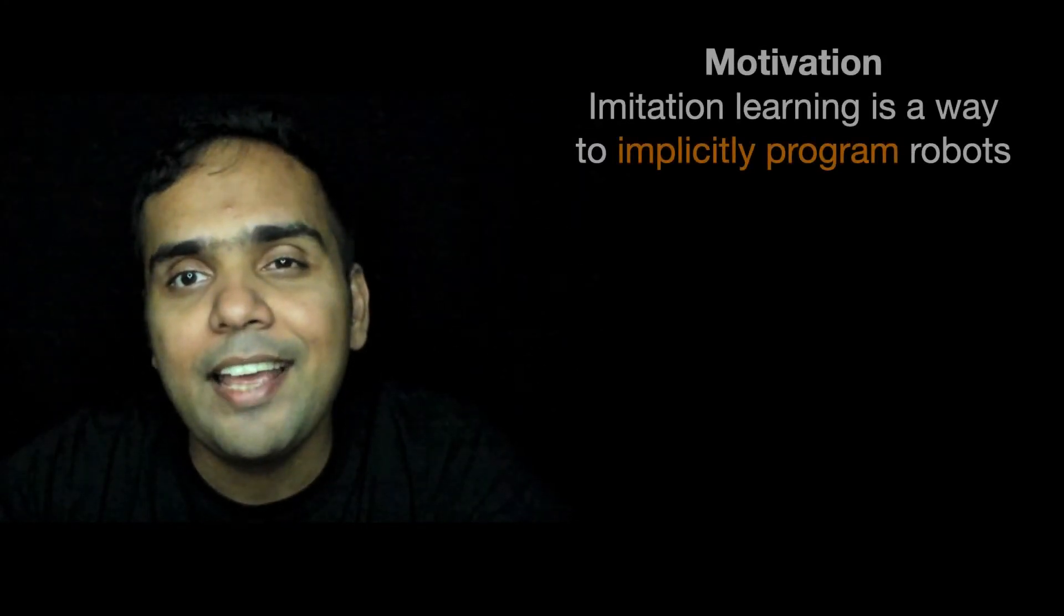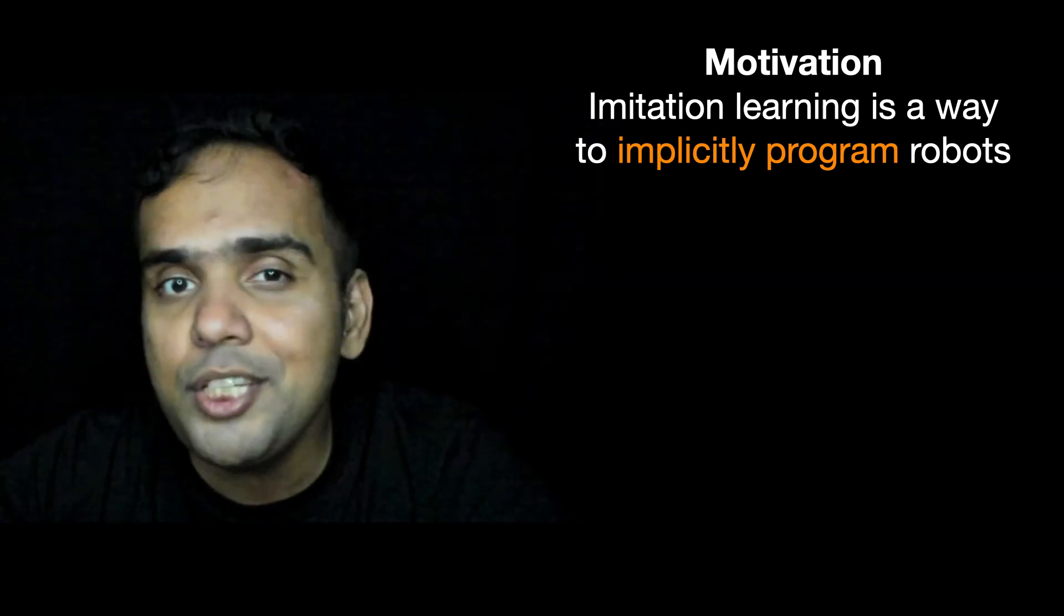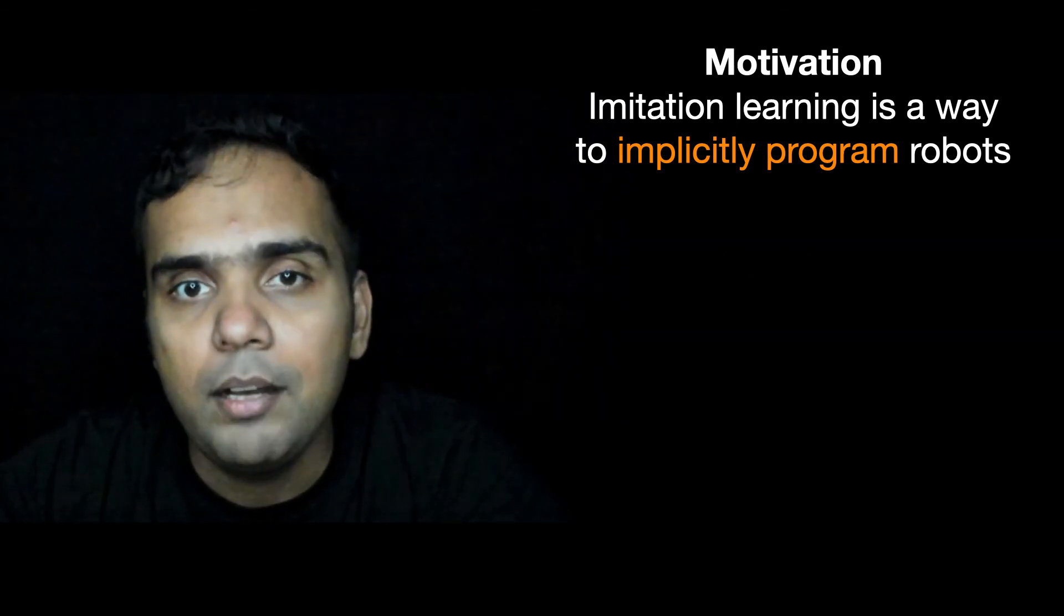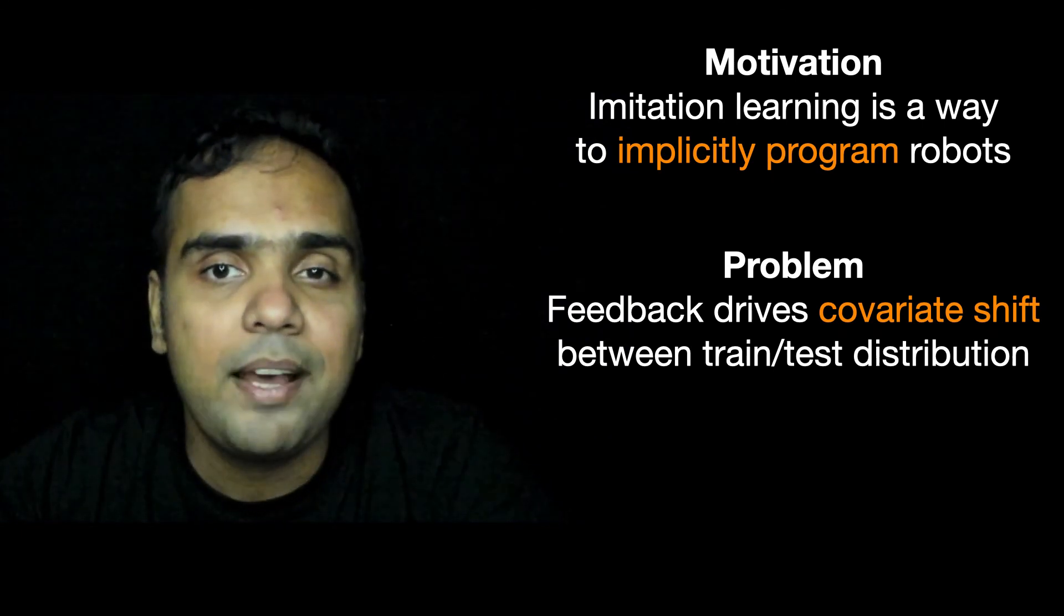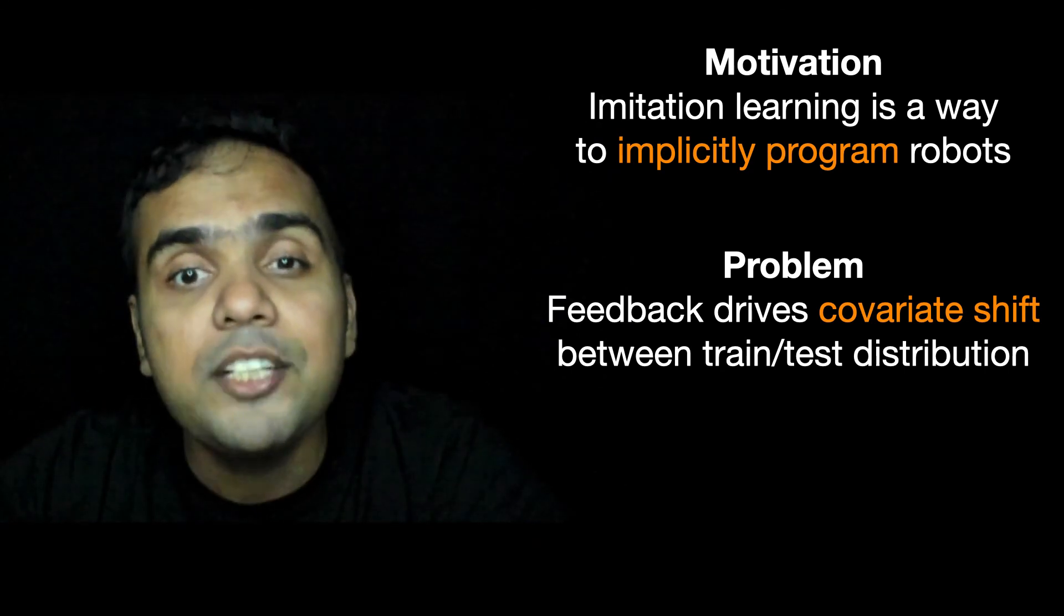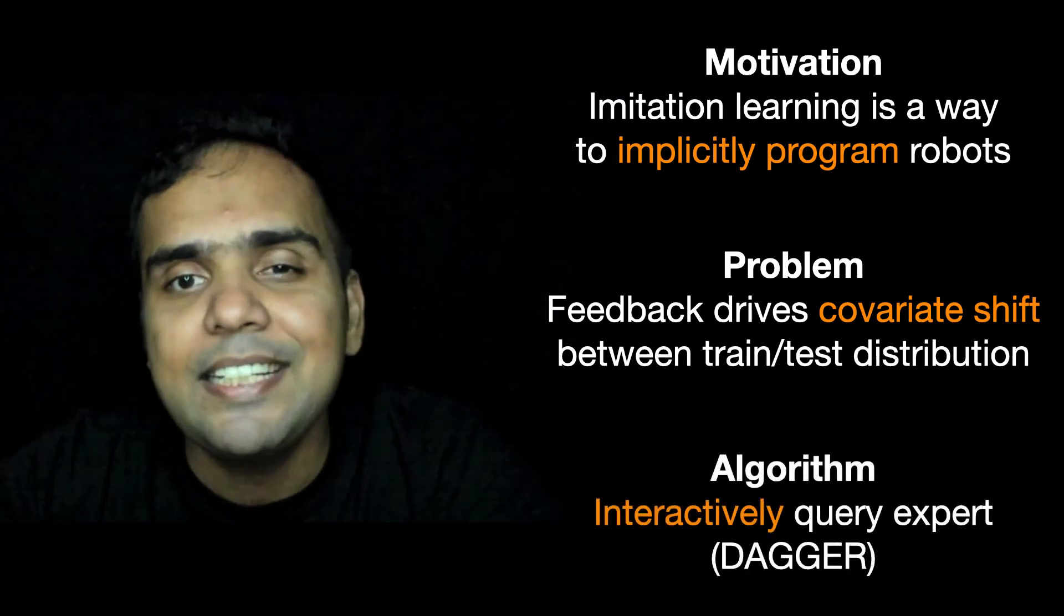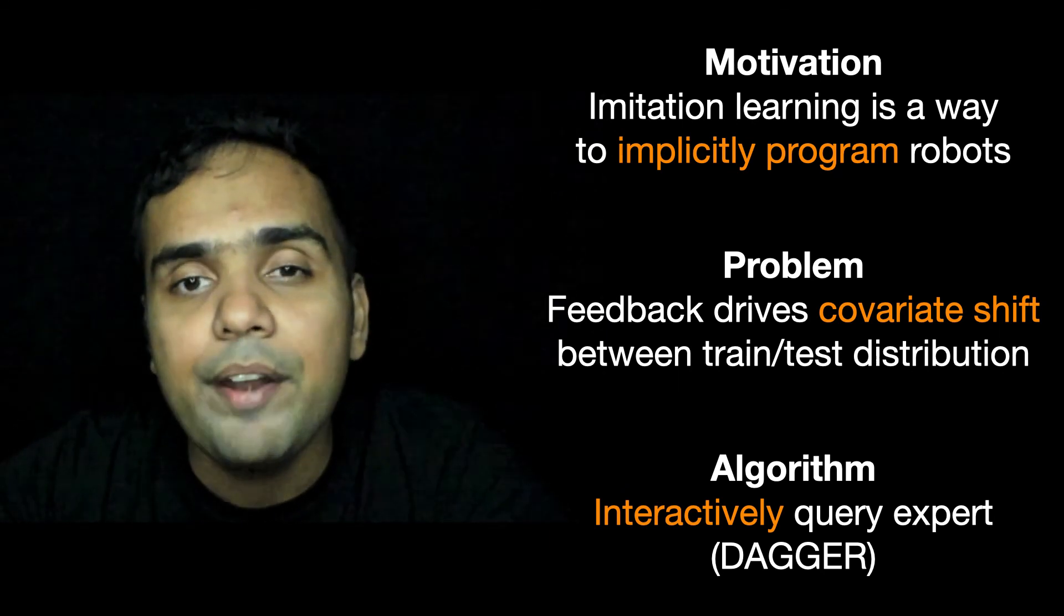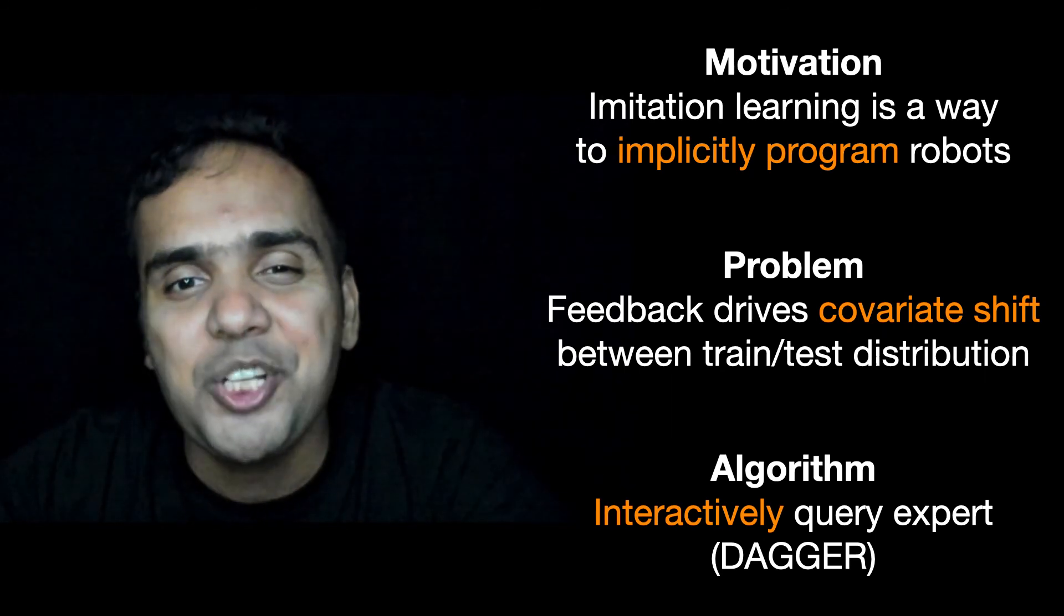And this brings us to the end. To summarize, imitation learning is a powerful way to implicitly program robots. Instead of tediously tinkering with rules or tuning robot functions, just demonstrate how you would like the robot to behave. But you can't naively apply supervised learning even on the simplest of examples. This is because of feedback. The output of the robot feeds back in as input. Feedback drives a covariate shift between train and test distribution. Thankfully, there is a fix. Instead of passively collecting data up front, you need to interactively query the expert on the states the learner may visit. And we saw a simple yet powerful algorithm DAGGER that does just that.